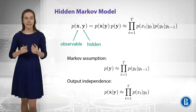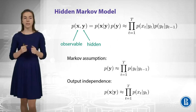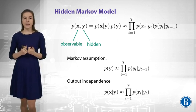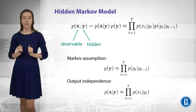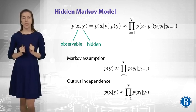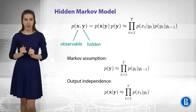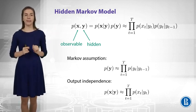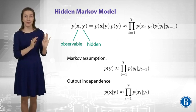The second assumption is about output probabilities. We need to produce the probabilities of x given y, and we factorize it into probabilities for separate positions. For every position, we have the probability of the current word given the current tag. Given these two assumptions, you can write down the formula at the top of the slide, and this is the definition of the hidden Markov model.